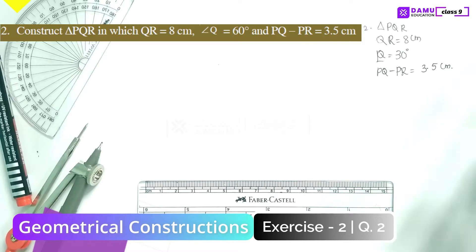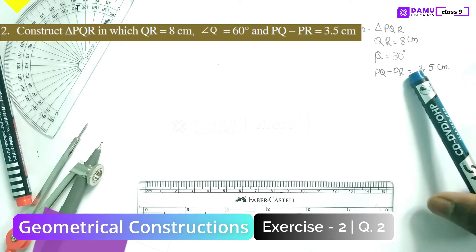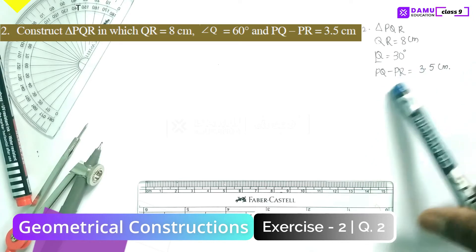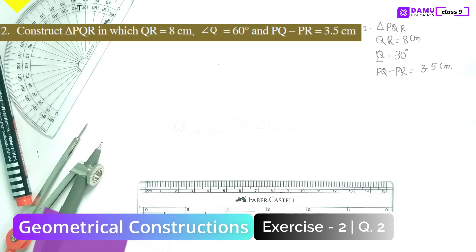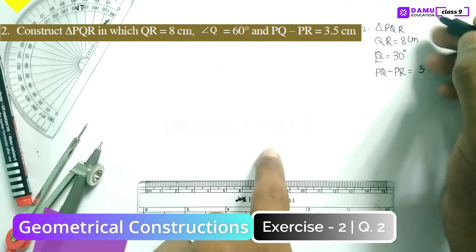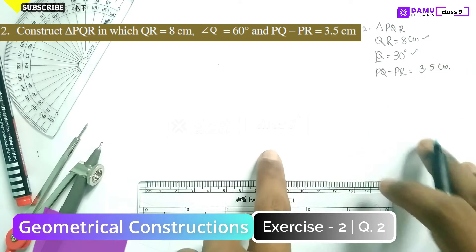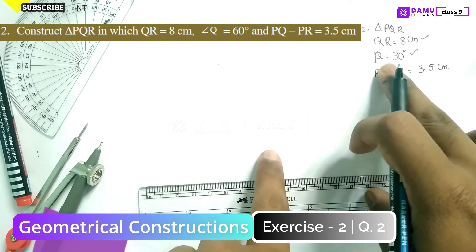In this module we are going to discuss our second question: construct triangle PQR where QR is equal to 8 centimeters, angle Q is equal to 30 degrees, and PQ minus PR is equal to 3.5 centimeters. First, whatever is given, we have to construct the base and angles.